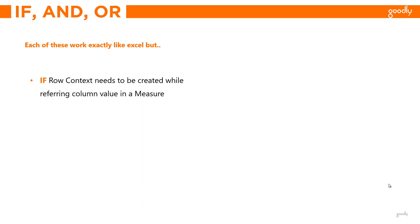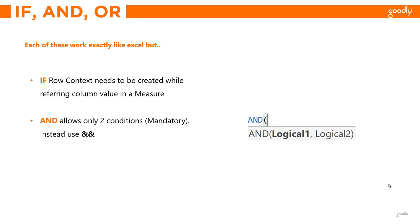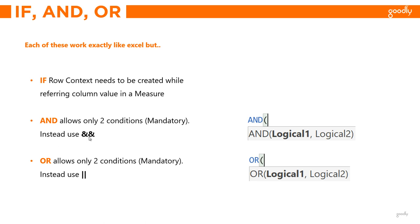The next one is the AND function. In Excel you're able to write as many conditions as possible. In Power BI you mandatorily have to write two conditions and no more than two, but if you want more than two conditions you can use the double AND symbol (&&). The same applies to the OR function — mandatorily two conditions, and if you want to go beyond two you can use a double pipe (||).